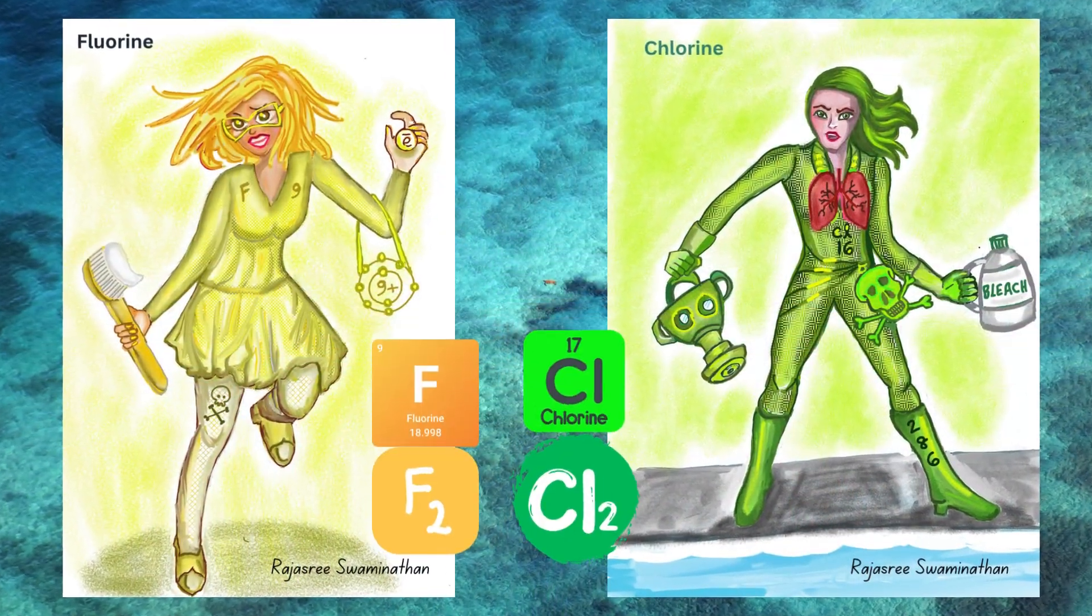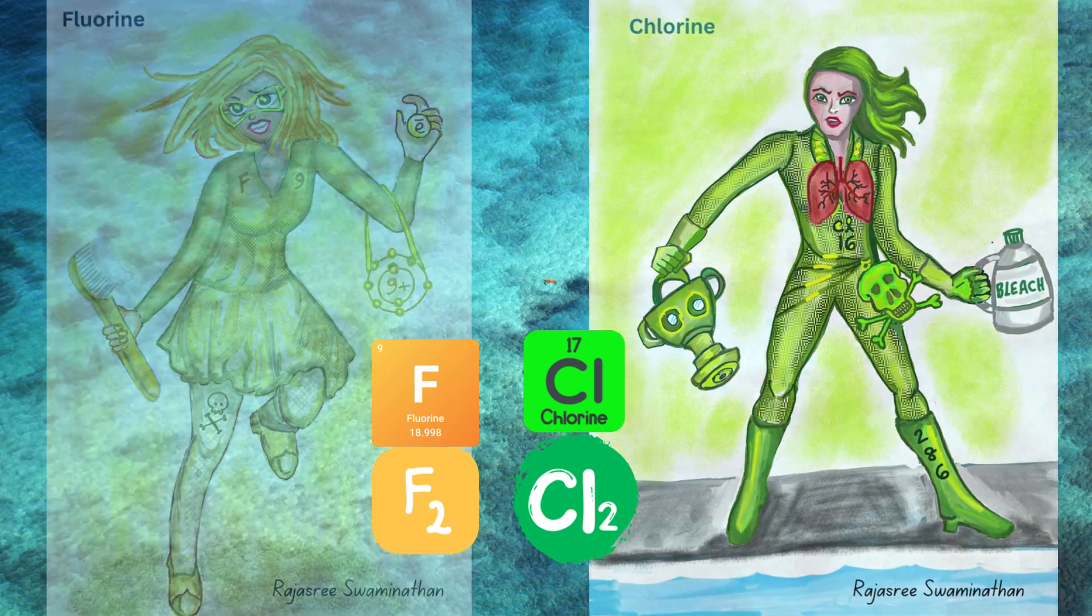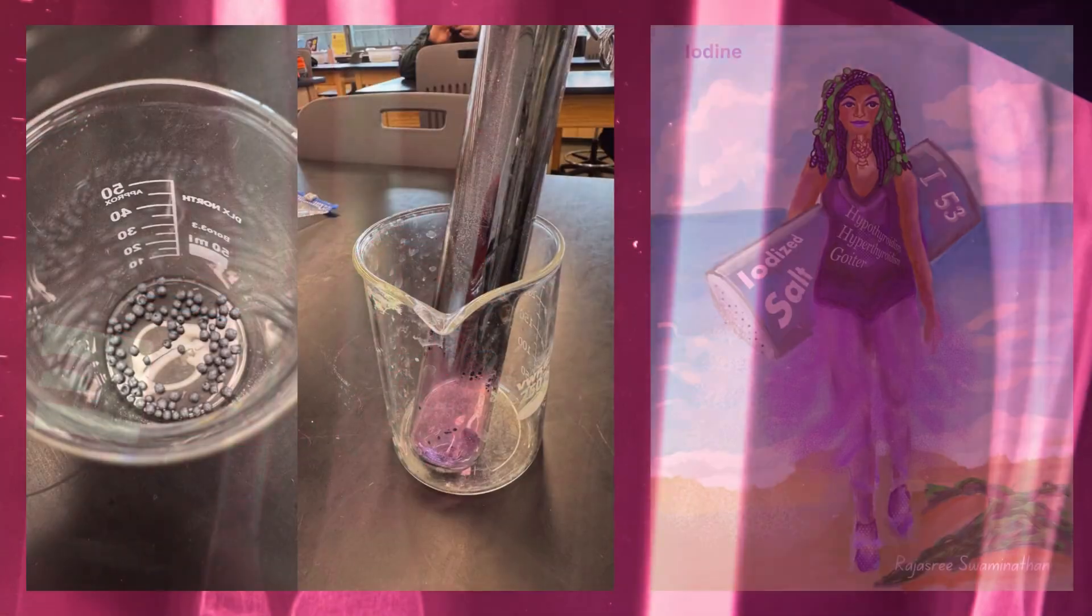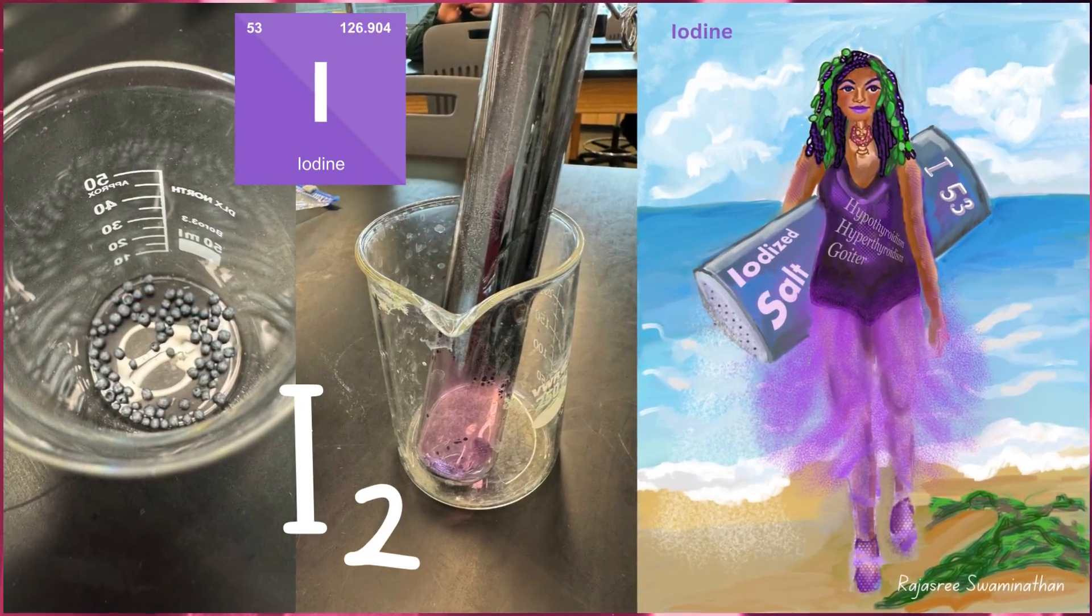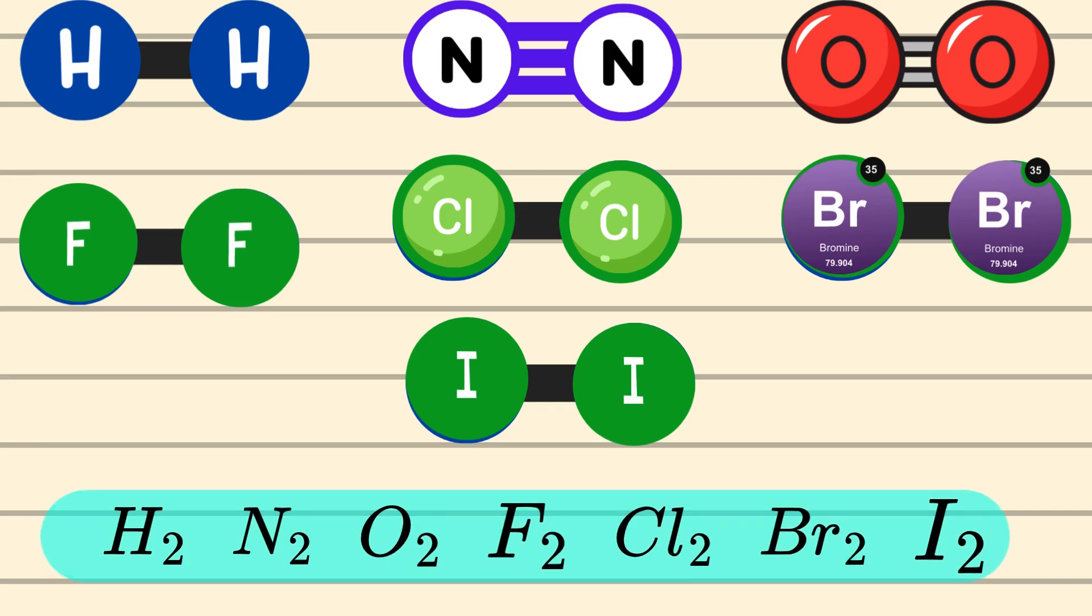Fluorine and chlorine gases contain F2 and Cl2 molecules. Bromine liquid contains Br2 molecules. Solid iodine contains I2 molecules. These seven elements, vital for various applications, consist of bonded pairs rather than single atoms.